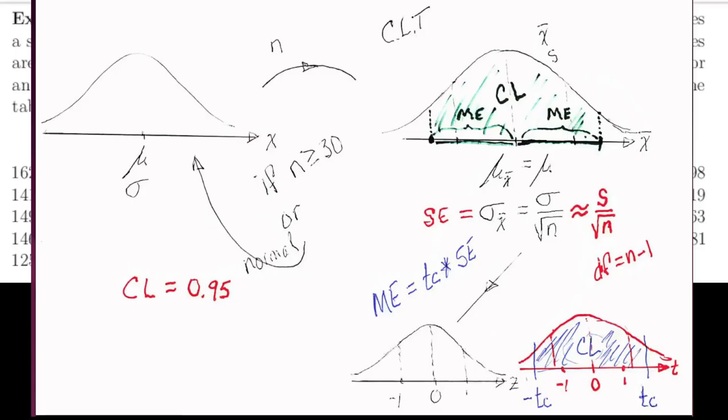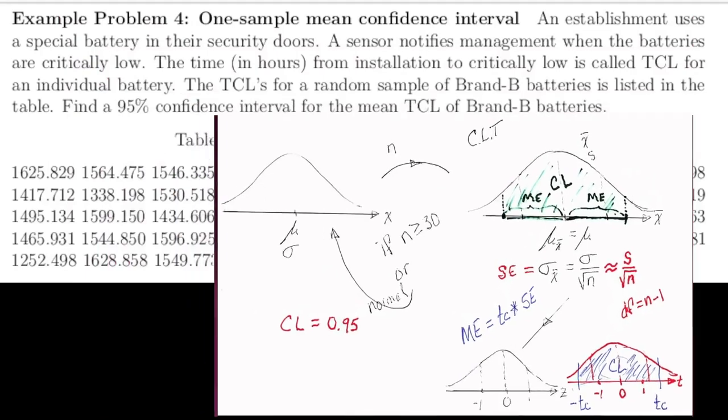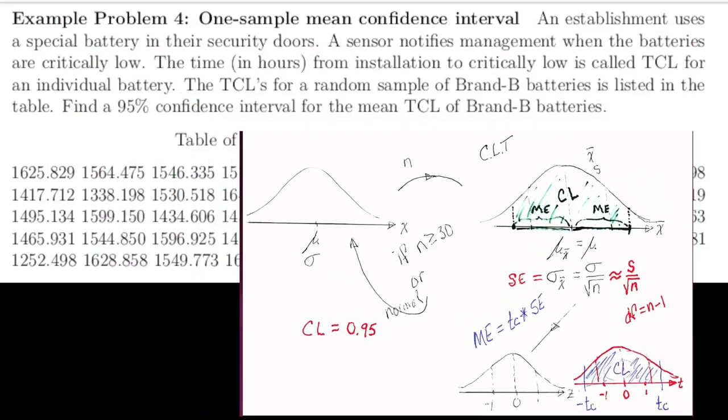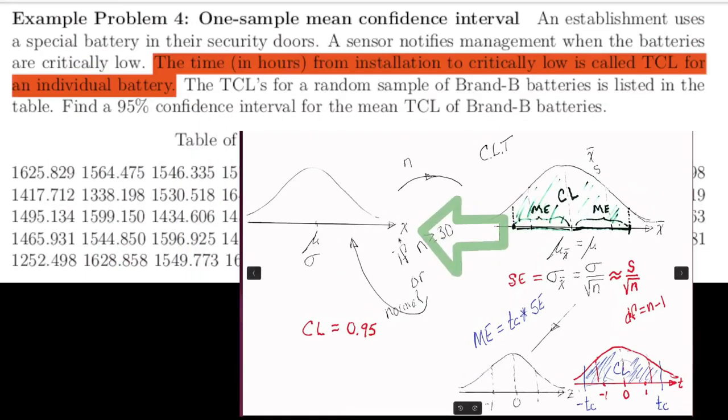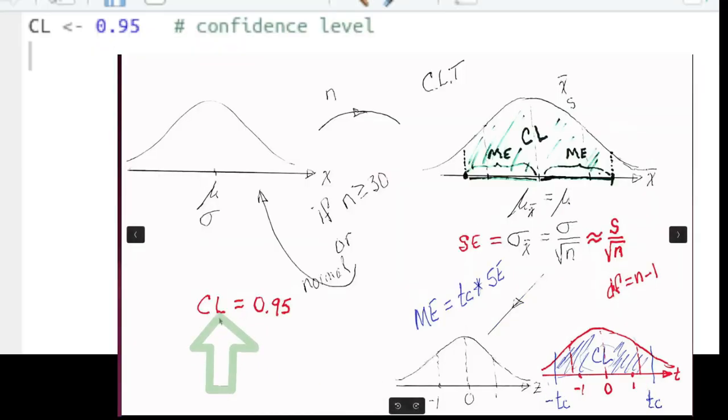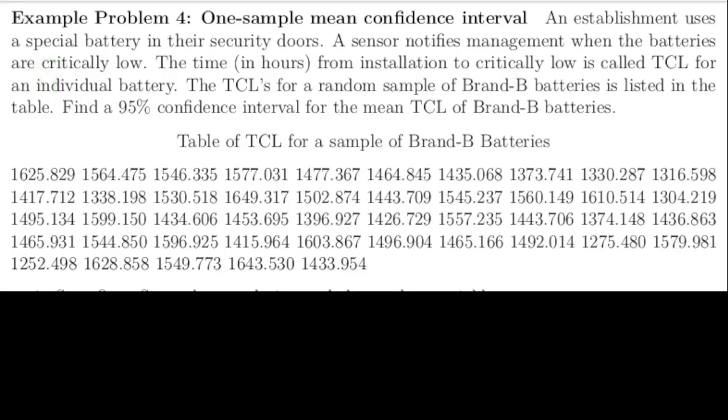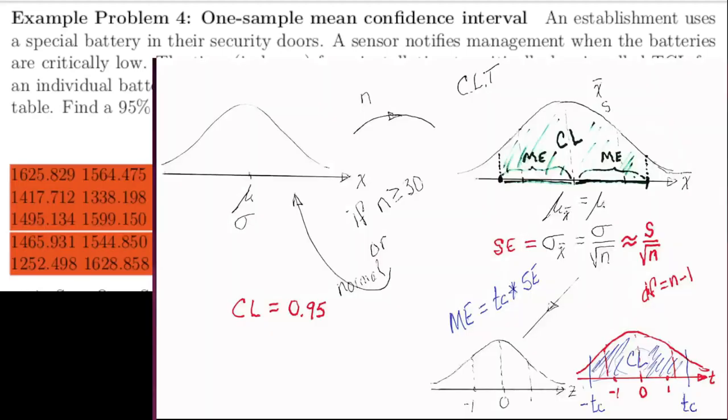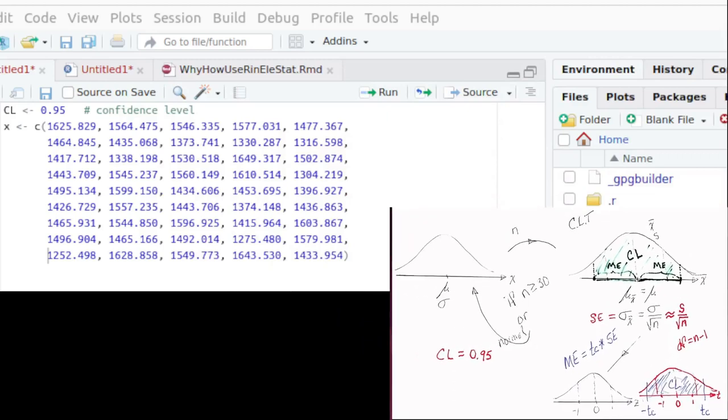We'll use the three distribution diagram as a roadmap for building an R script for this problem. The variable in our population is the TLC of brand B batteries. The confidence level that we're looking for is 95%, so that's given information. The sample data is given, so we'll need to wrangle that into a vector. I've now completed that task.